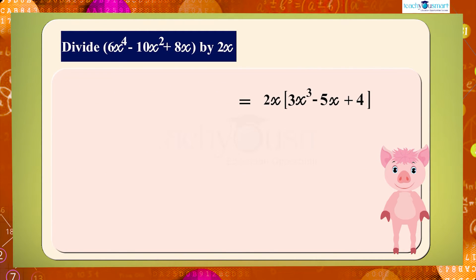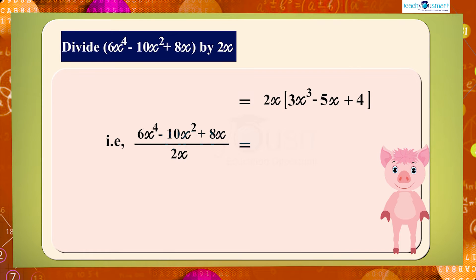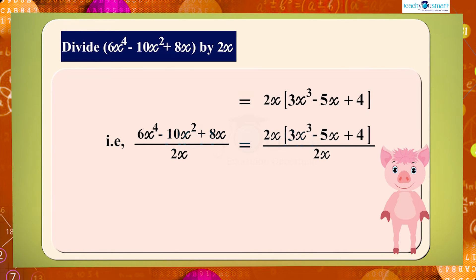Now we can divide the given polynomial by 2x. That is, 6x raised to 4 minus 10x squared plus 8x, whole divided by 2x, equals 2x multiplied by (3x cubed minus 5x plus 4), whole divided by 2x. By cancelling 2x, we get 3x cubed minus 5x plus 4.